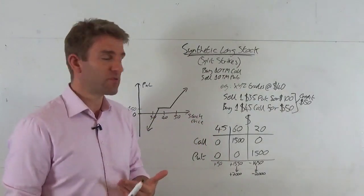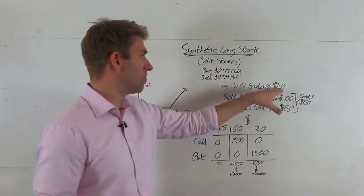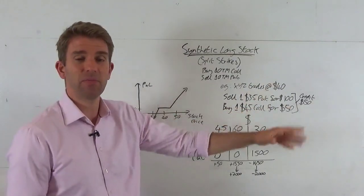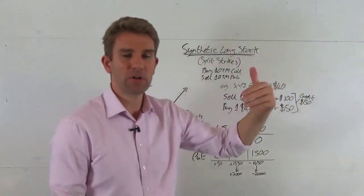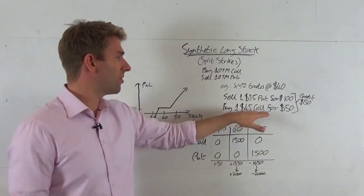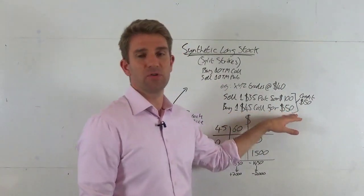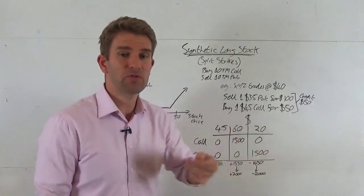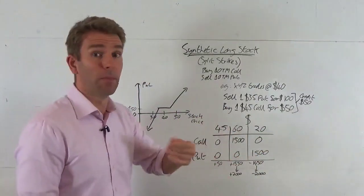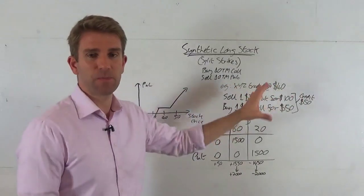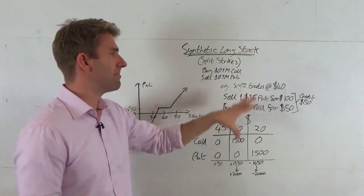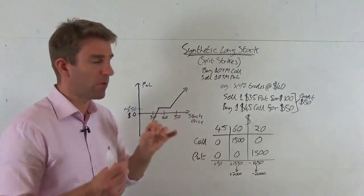We also need to put on the call side of the spread and this is an out of the money call. We're trading 40, anything out of the money is away from the price. The call option would be above the price, put option below the price. Buying at 45 and it's costing us 50 to do that. So we have to pay 50 to buy the right to buy that XYZ stock at 45 at a specific expiry in the future.